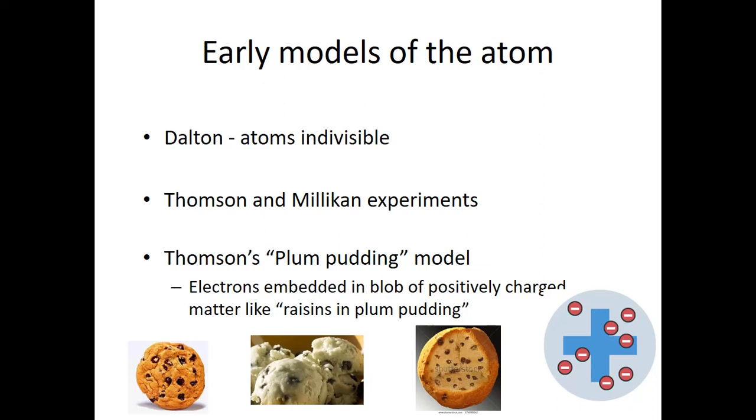So Thompson came up with this plum pudding model. As he looked at his experiment with Milliken and he was thinking about it, he said there must be something positive. And the electrons we know are individual particles. So the atom itself is like a custard. And the electrons are like raisins in a custard, which is what plum pudding is. And they float around in there and they cancel each other out. Look at our picture on the right. So you'd have these negative electrons floating around in a pool of custardy positive charge. Sort of like a chocolate chip cookie or chocolate chip ice cream would be another mental picture.